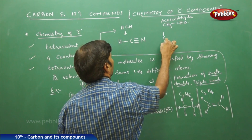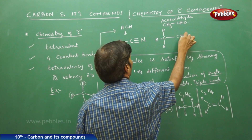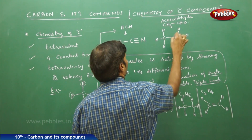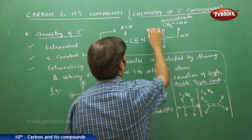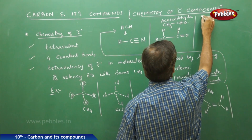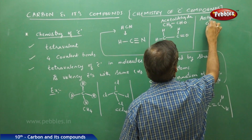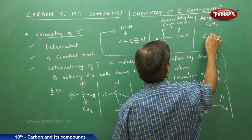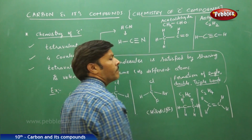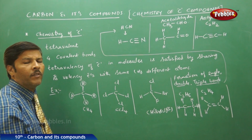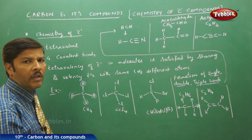In acetaldehyde's structure, with hydrogen it forms a single bond, with carbon and oxygen it forms a double bond, and again with hydrogen a single bond. A triple bond between two carbons can also be expected — that is acetylene, C2H2 — with a triple bond between the two carbons and single bonds to the two hydrogens. All these molecules are discussed to prove that carbon is tetravalent in nature.